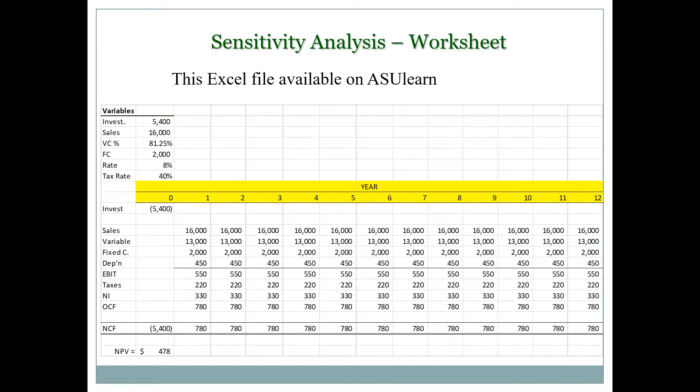Cash flow from assets equals operating cash flow minus the change in net working capital minus net capital spending. Since we don't have any change in net working capital or net capital spending, cash flow from assets equals operating cash flow in every year. We take the net present value by calculating the present value of 12 years of future cash flows and subtracting the initial cost, confirming this is a positive NPV project at $478,000.